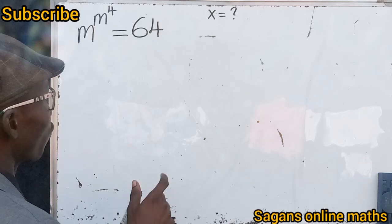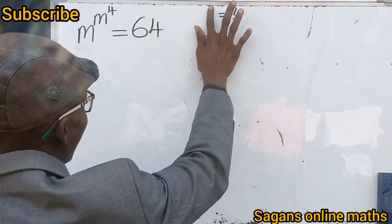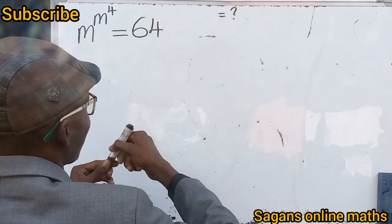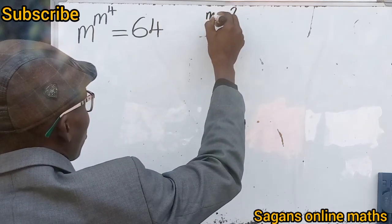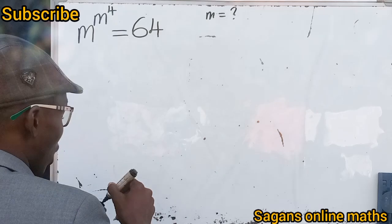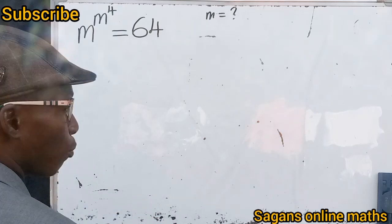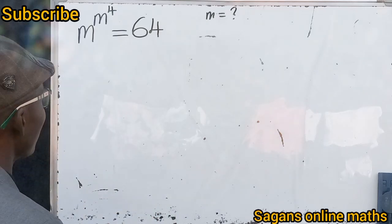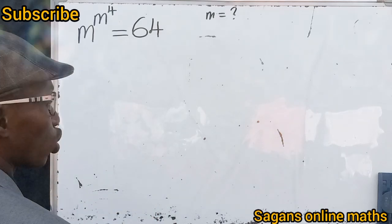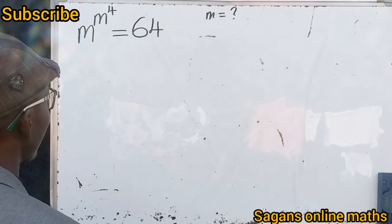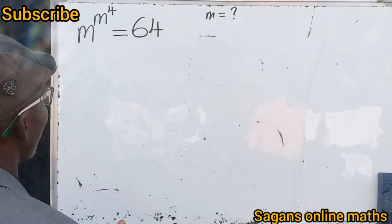We are asked to find the value of m — not x, the value of m. This question is very simple. Our first step is to consider the power here, which is m to the power of 4.